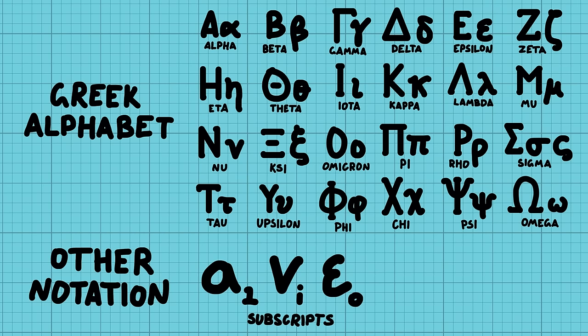You also get other notations like subscripts, and these are all basically used as labels to identify different constants or variables.